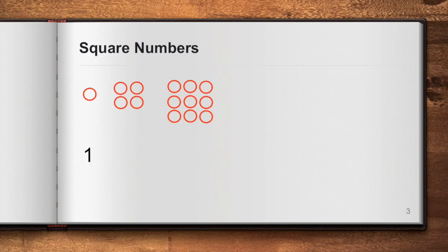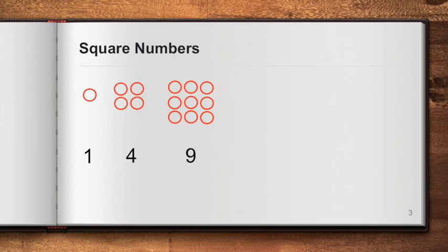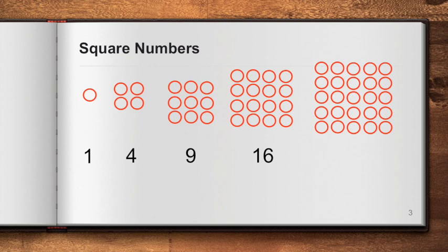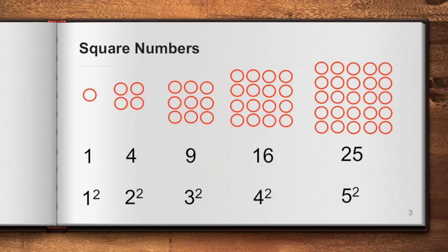We have one as the first number in the sequence — that is the first square number — followed by four, followed by nine, and then we will have a four by four giving us 16. The next is five by five consisting of 25 circles. These are the square numbers, and they can be written as 1 squared, 2 squared is 4, 3 squared is 9, 4 squared is 16, and 5 squared is 25.